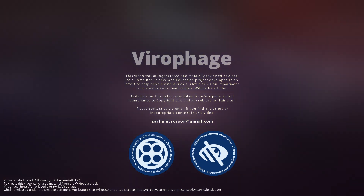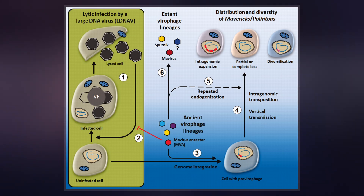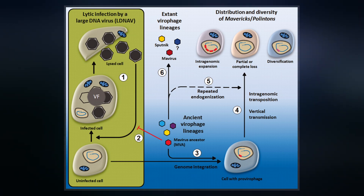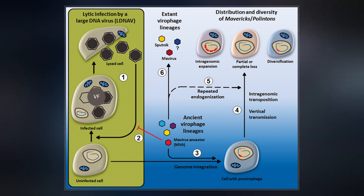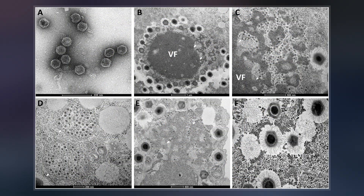Viraphages are small, double-stranded DNA viral phages that require the co-infection of another virus. The co-infecting viruses are typically giant viruses. Viraphages rely on the viral replication factory of the co-infecting giant virus for their own replication.